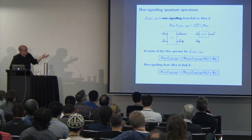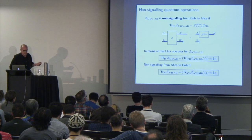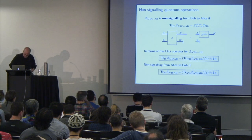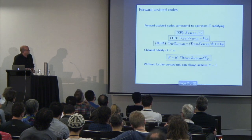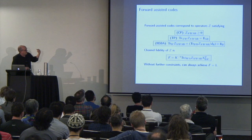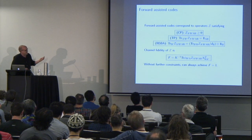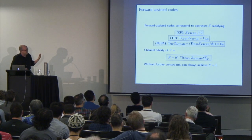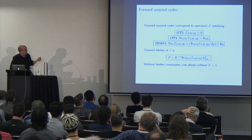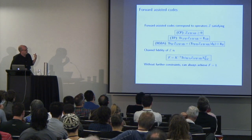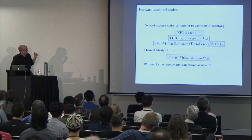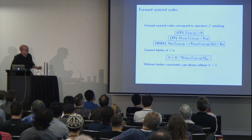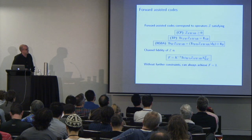The non-signaling from Bob to Alice condition is a simple linear constraint on the Choi operator of the bipartite operation. Similarly, there's a non-signaling from Alice to Bob condition given by another constraint. The whole set of forward-assisted codes can then be written in terms of these Choi operators: it must satisfy the standard CPTP constraints, the non-signaling from Bob to Alice constraint, and the channel fidelity achieved for dimension K is given by a linear function of Z.